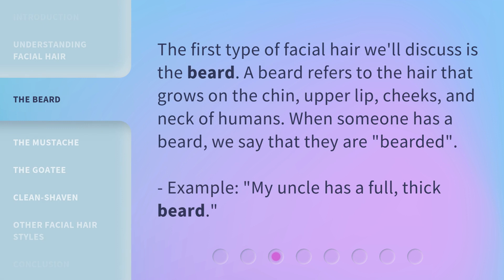The first type of facial hair we'll discuss is the beard. A beard refers to the hair that grows on the chin, upper lip, cheeks, and neck of humans. When someone has a beard, we say that they are bearded. Example: My uncle has a full, thick beard.